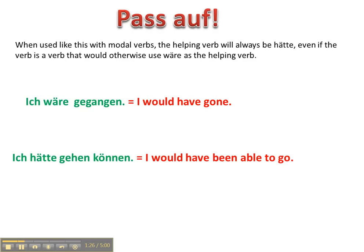Remember we talked about this in another video — certain verbs that indicate a clear motion to a new location, a change in state, or if it's sein, werden, or bleiben, they take wäre as the helping verb. But when we form sentences using a modal verb in this subjunctive mood, that helping verb will always be hätte.